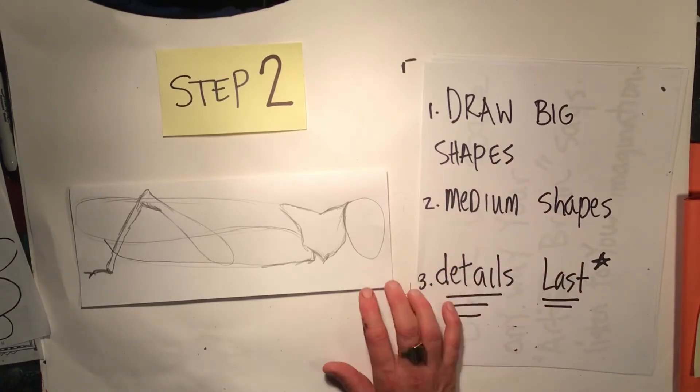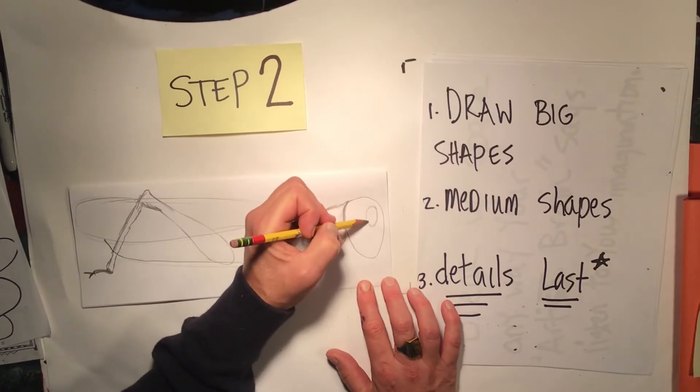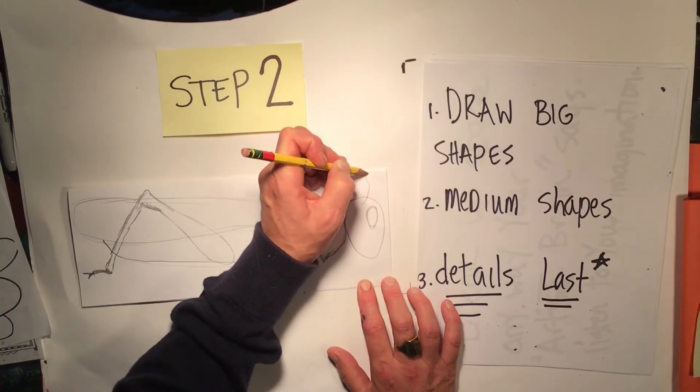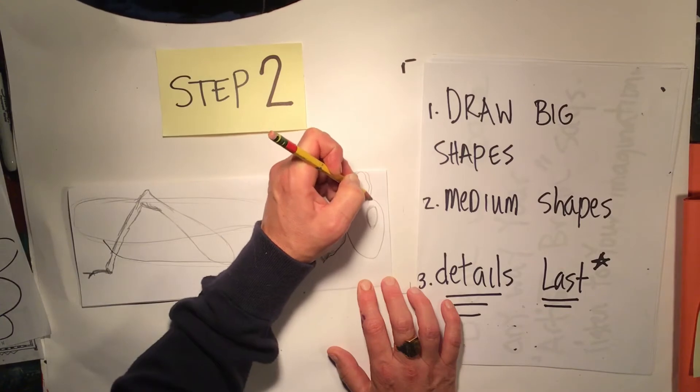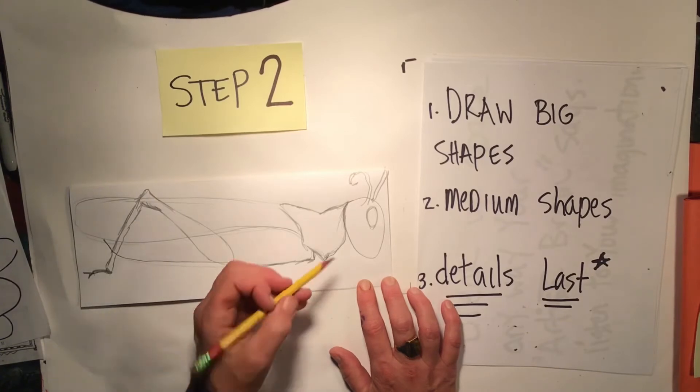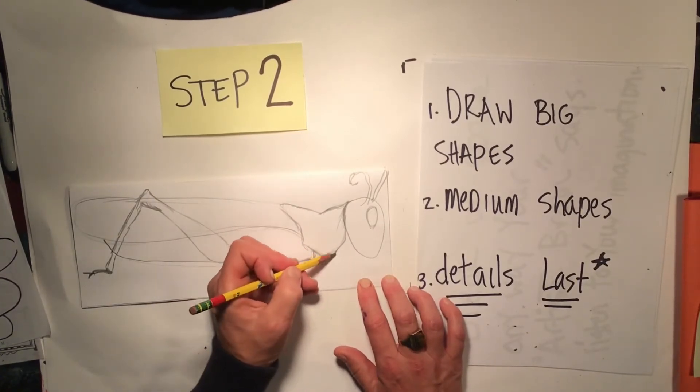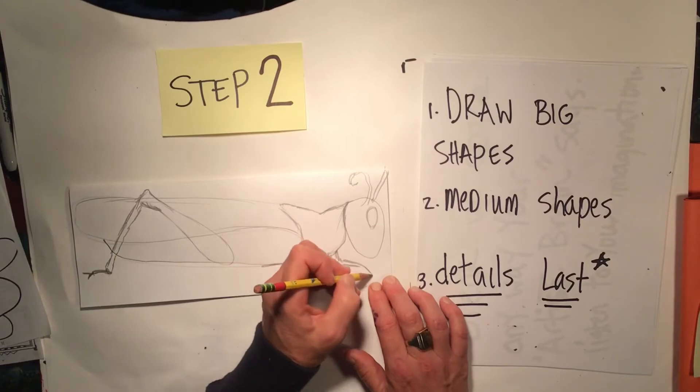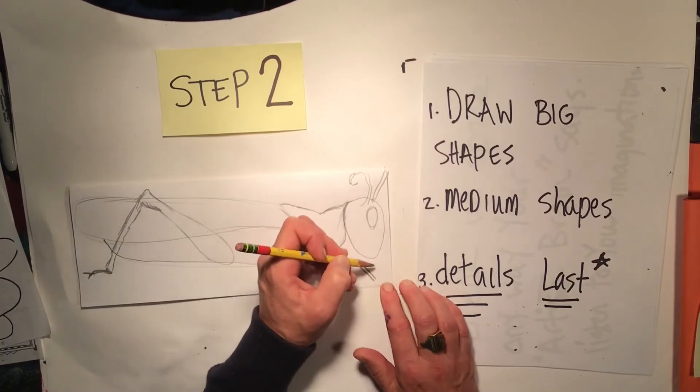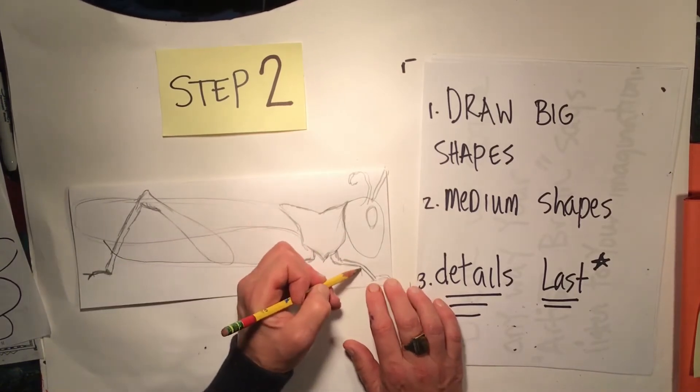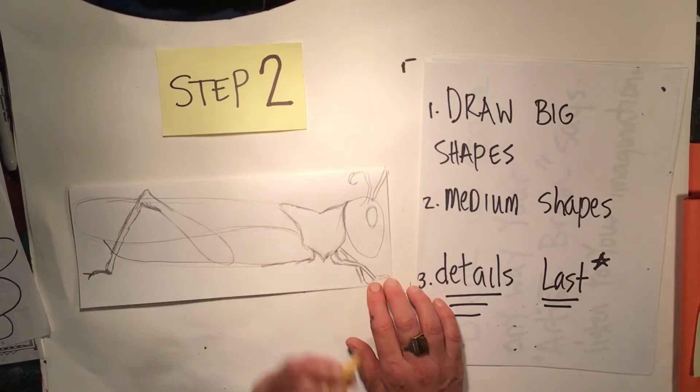Now I'm going to draw the medium shapes next. The eye is a medium shape. Those antennae could be medium shape. I don't have enough room here, so I'm going to curve my antennae even though the picture I'm looking at, the antennas are going a different direction. I'm going to improvise just a little bit. Another medium shape would be this front leg. I think of legs like lines and I look at the direction that the lines go. And then I just see part of that leg because legs in the back, we don't see all of it.